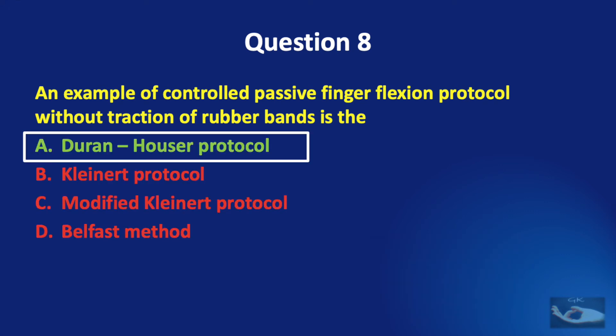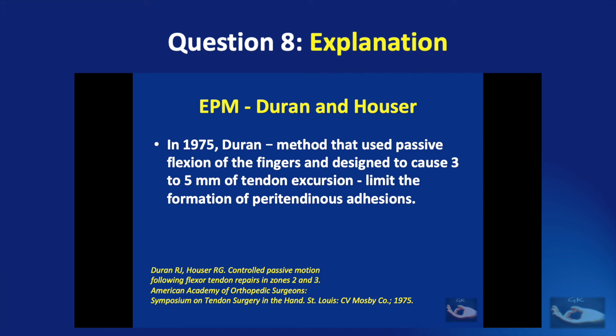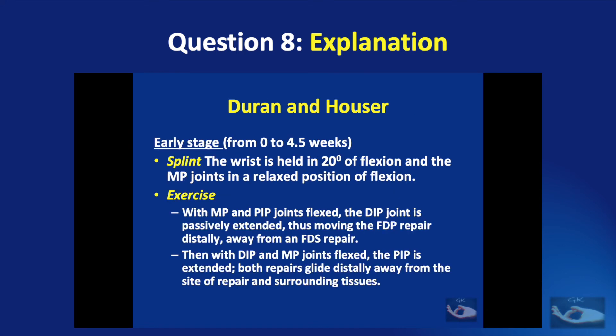The answer is the Duran-Houser protocol. Around 1975, the Duran-Houser method used passive flexion of the fingers to cause about 3 to 5 millimeters of tendon excursion, which helped to limit the formation of peritendinous adhesions. In this protocol, immediately after surgery, a splint is applied with the wrist in 20 degrees of flexion and the MCP joints in a relaxed position of flexion.